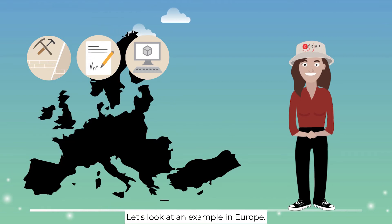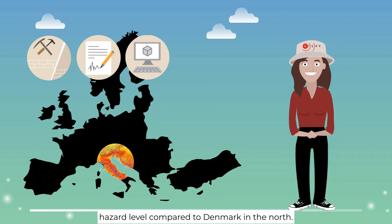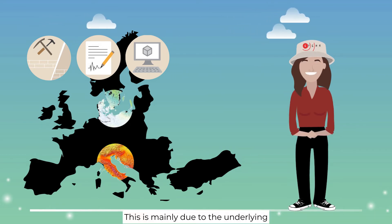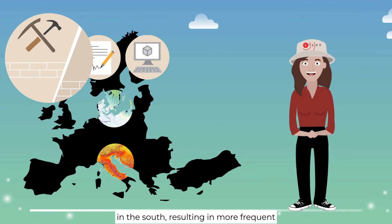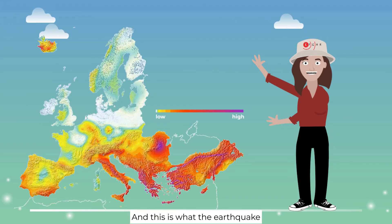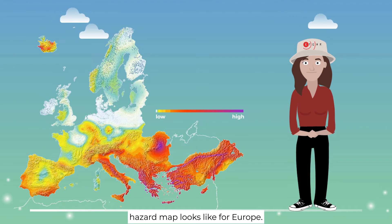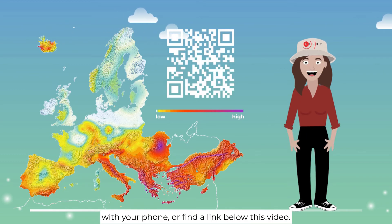Let's look at an example in Europe. The region in central Italy has a higher hazard level compared to Denmark in the north. This is mainly due to the underlying plate tectonic setting, with high deformation rates in the south, resulting in more frequent earthquakes occurring in southern Europe. And this is what the earthquake hazard map looks like for Europe. For more details, pause the video and scan this code with your phone or find the link below this video.